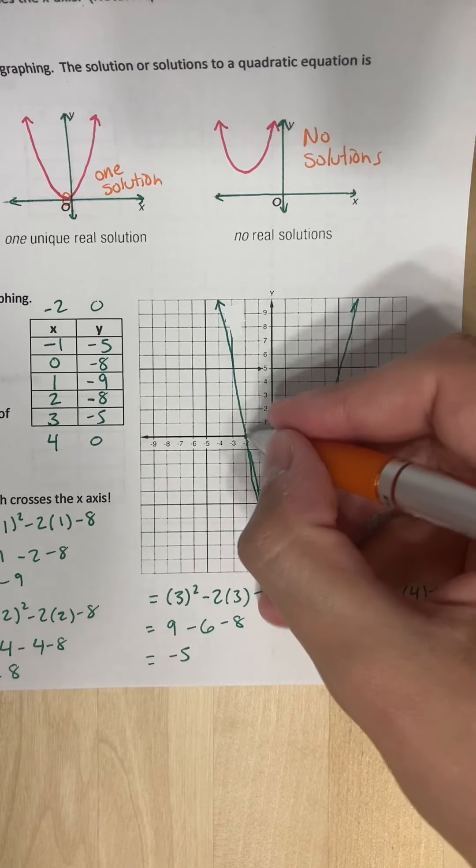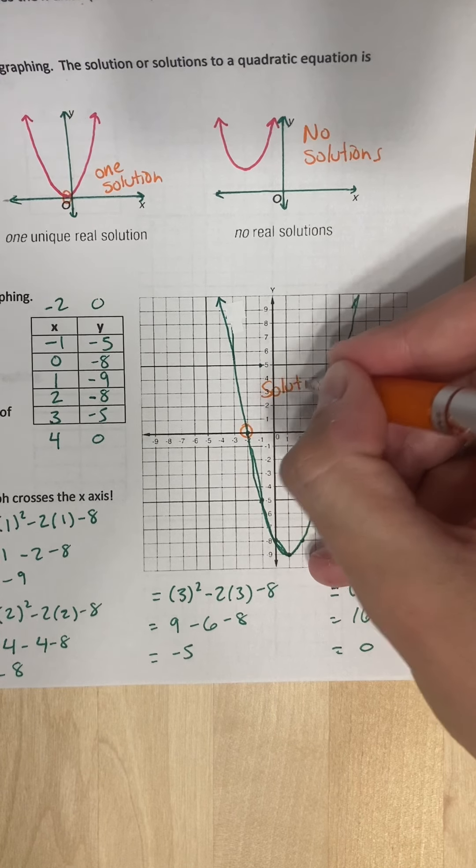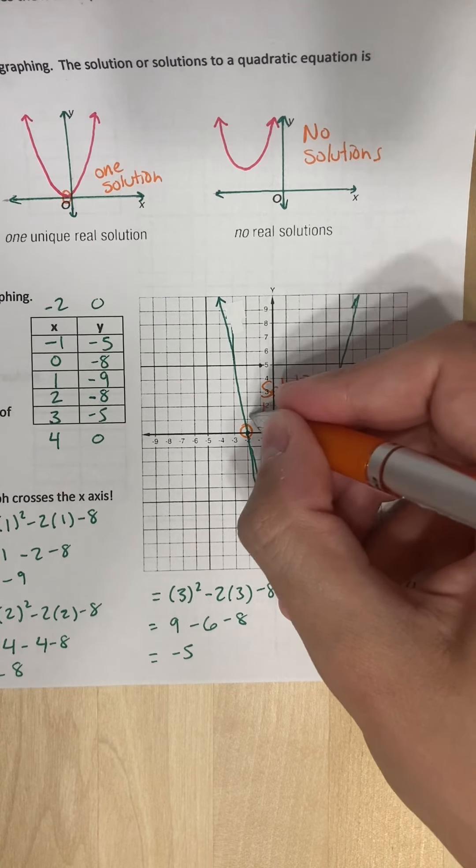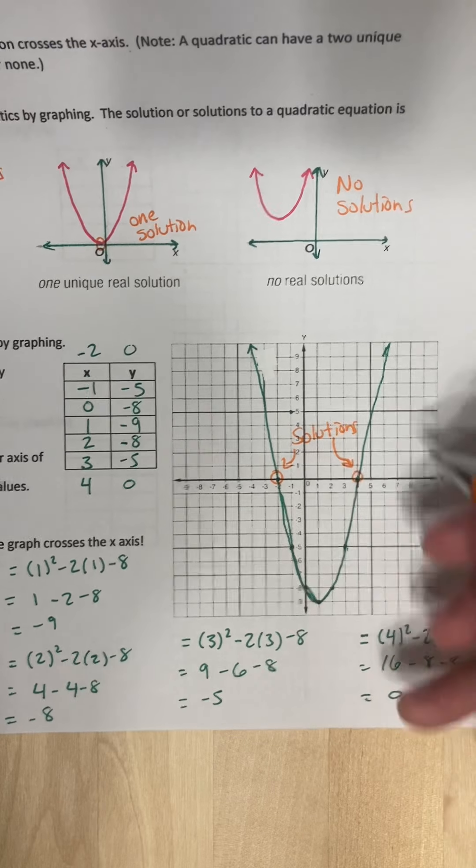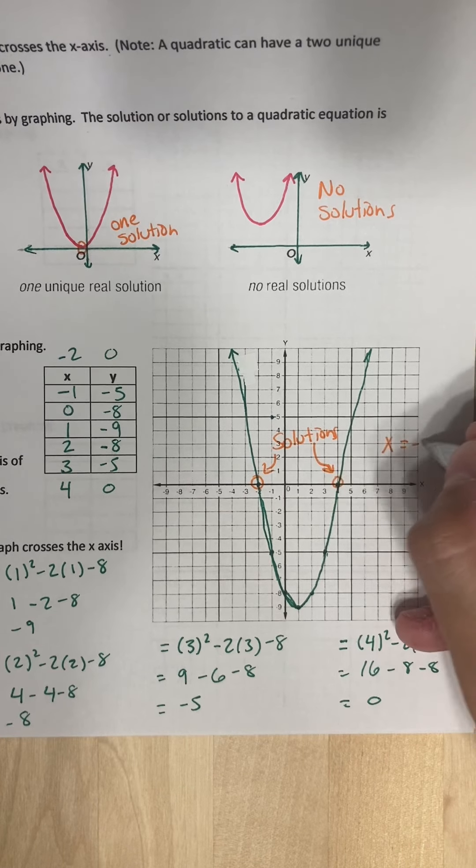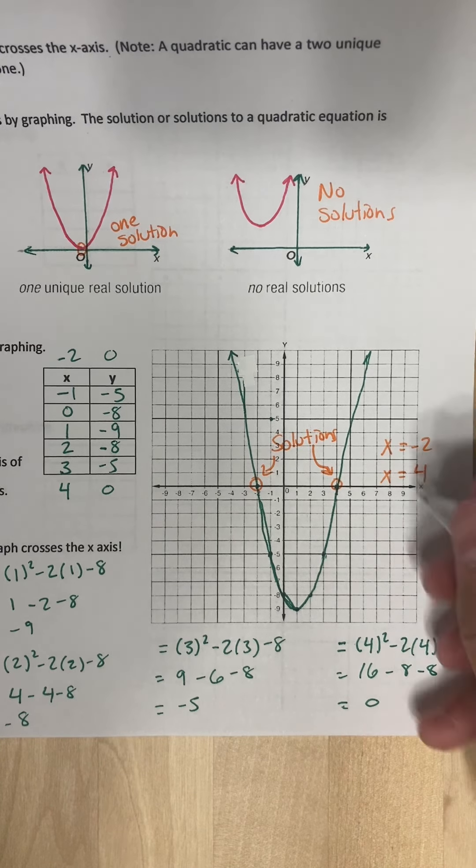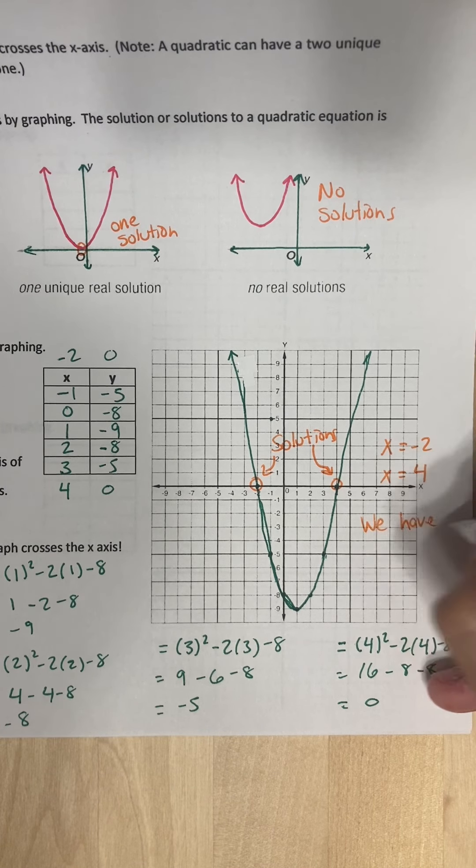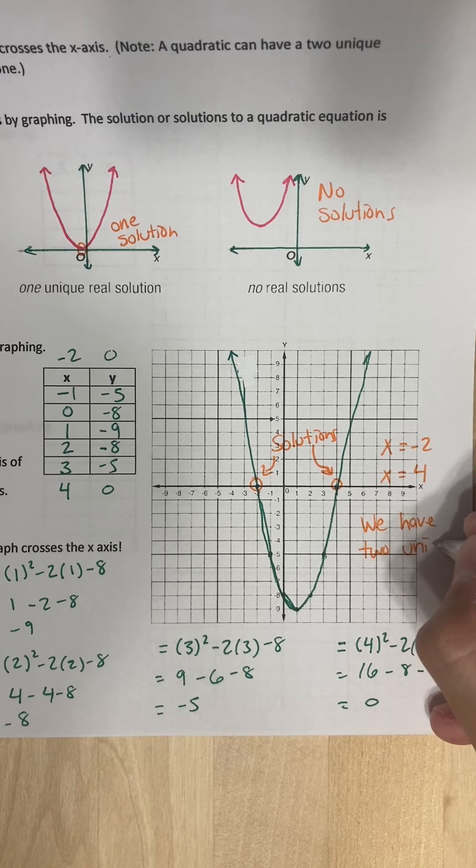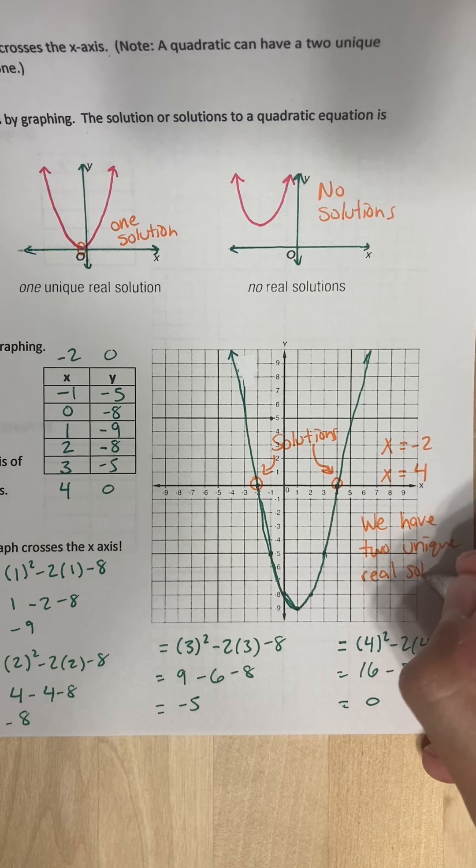Okay, so these right here, these are our solutions. This solves x squared minus 2x minus 8 equals 0. And what are the values of x? Well, x is negative 2 and x is 4. So how many solutions do we have? We have 2. We have 2 unique, real solutions.